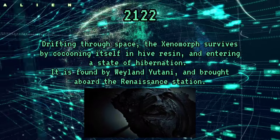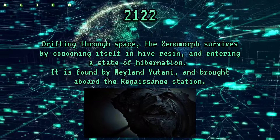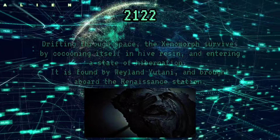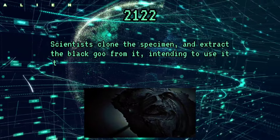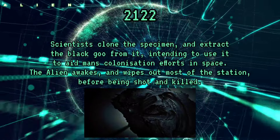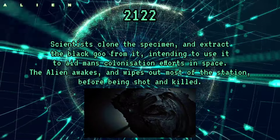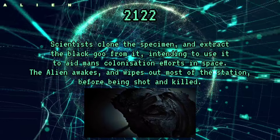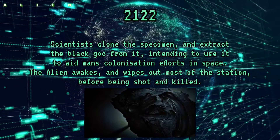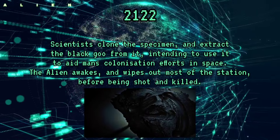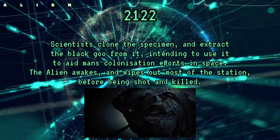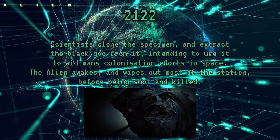The xenomorph is found by Weyland-Yutani and brought aboard the Renaissance Station. Scientists clone the specimen and extract the black goo from it, intending to use it to aid humanity's colonisation efforts in space. The alien awakes and wipes out most of the station before being shot and killed.